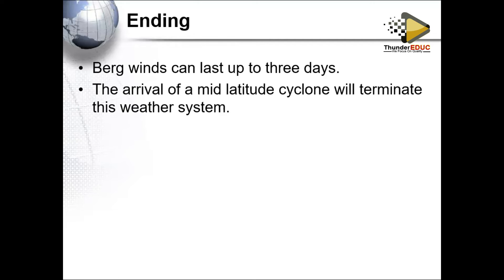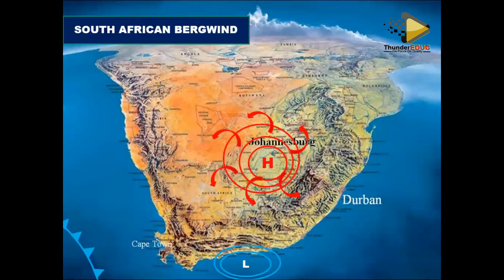Berg winds can be terminated by the arrival of the midlatitude cyclone. When the midlatitude cyclone gets close to the coast of South Africa, it terminates the berg winds because the midlatitude cyclone brings extreme cold conditions and cold winds, which reduce temperatures and stop the berg winds effect.